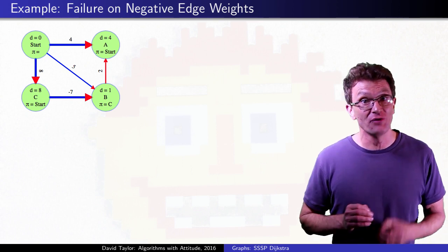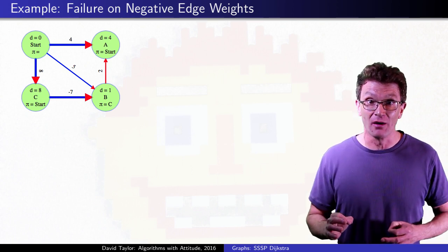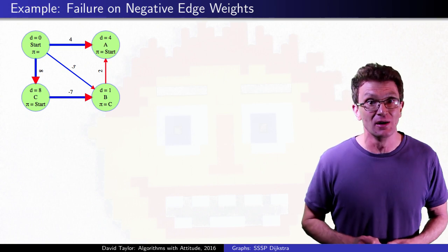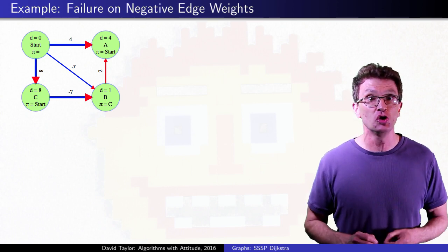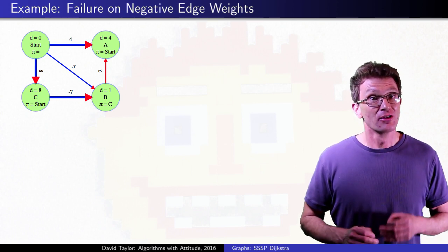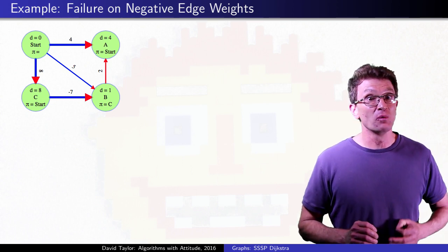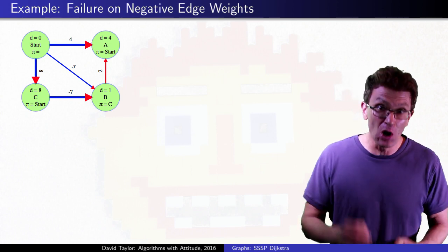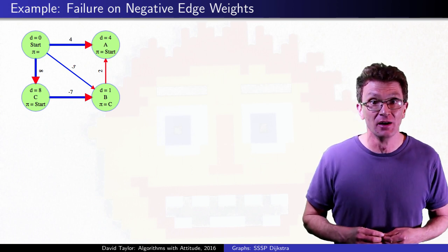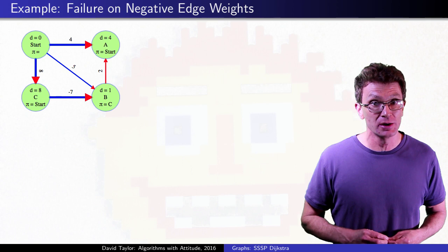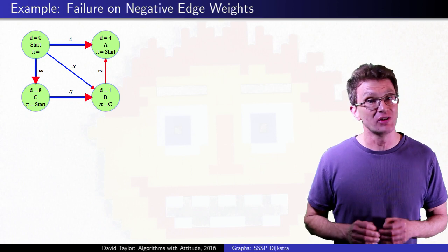This leads us to a nice observation about Dijkstra's algorithm. No negative weight edges is sufficient, but not necessary for it to give a correct answer. It might run ok, even with negative edge weights, even if that makes it remove vertices from the Q out of order from their distance from the start. The problem in that example wasn't just that there was a negative edge weight, it was that when we relaxed it, it lowered a distance estimate to a vertex that was already supposed to be done. If B hadn't been removed from the Q yet, or if the distance estimate to B didn't lower, that negative weight edge wouldn't have caused any problems.